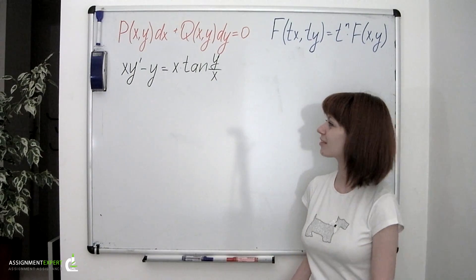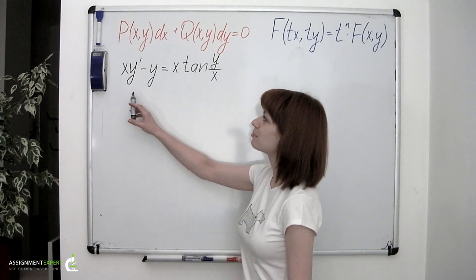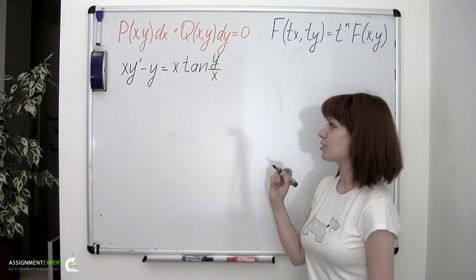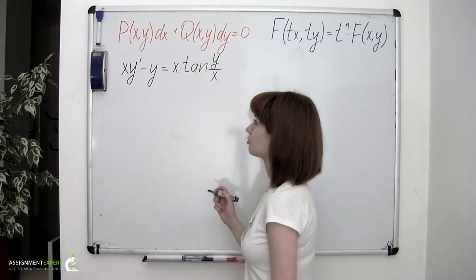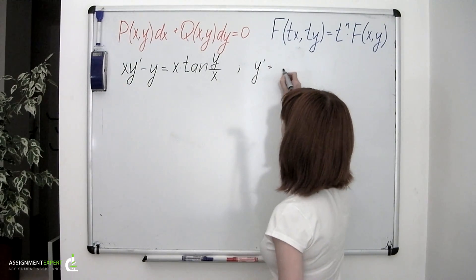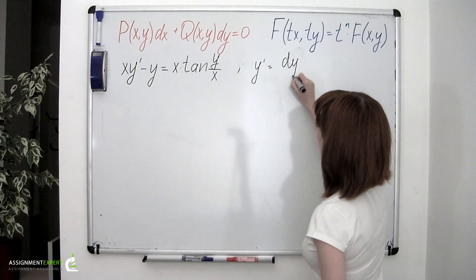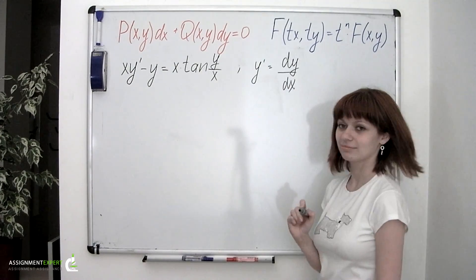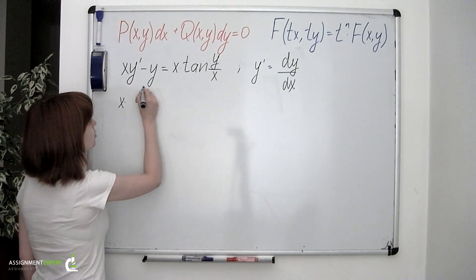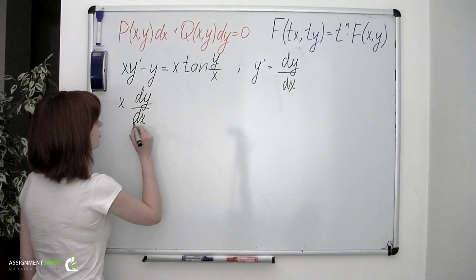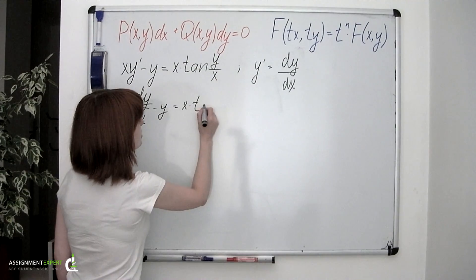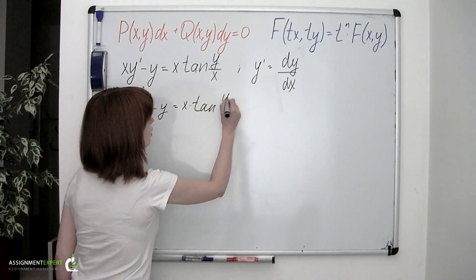Example 3. x times y' minus y equals x times tangent of y over x. First of all, let's write down this equation in the form we are already used to, remembering that y' is actually equal to dy over dx. So, x times dy over dx minus y equals x times tangent of y over x.